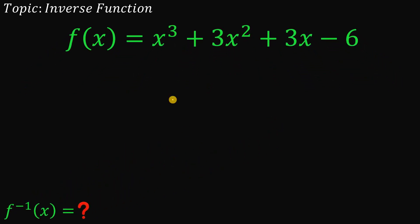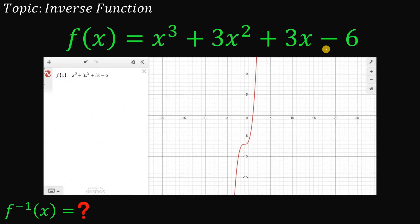All right. Now first, of course, what is the graph of f(x) = x³ + 3x² + 3x - 6? So here's the graph using Desmos. And here's the graph of its inverse.